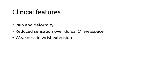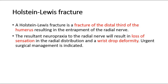The Holstein-Lewis Fracture is a fracture of the distal third of the humerus, resulting in entrapment of the radial nerve. The resultant neuropraxia to the radial nerve will cause loss of sensation in the radial distribution and a wrist drop deformity. Urgent surgical management is indicated.